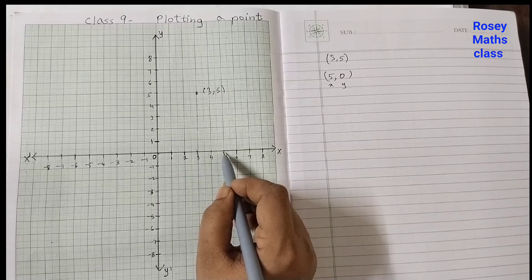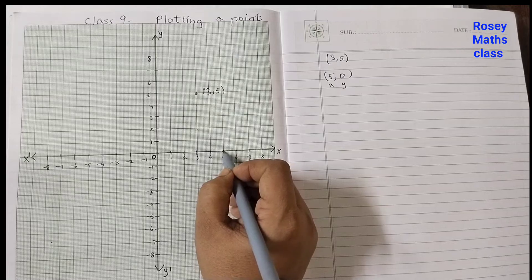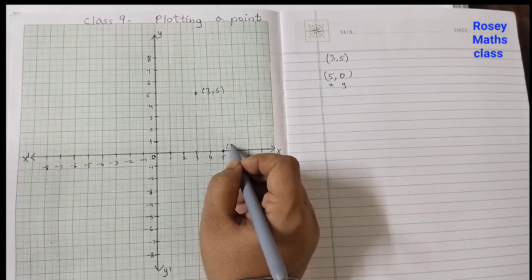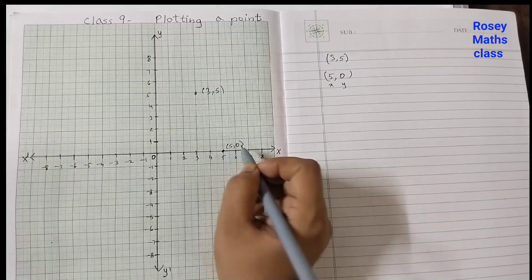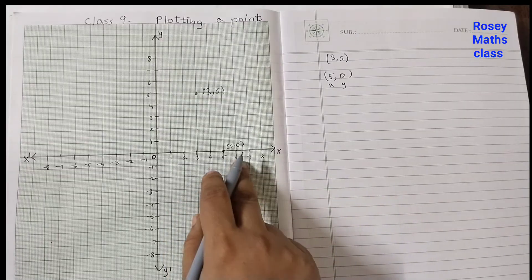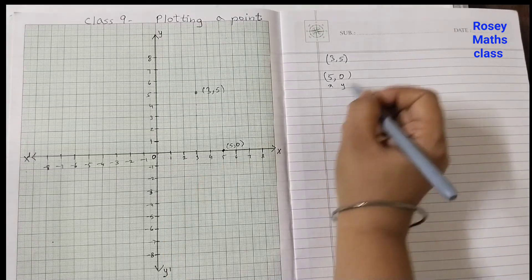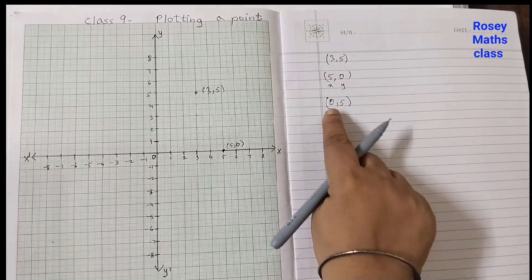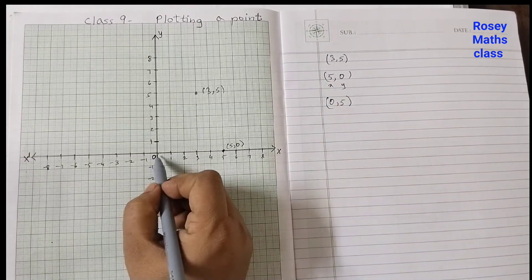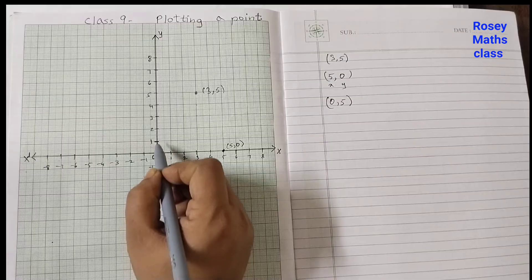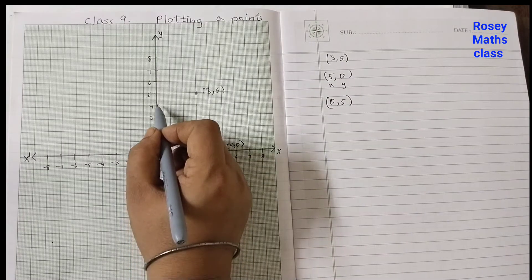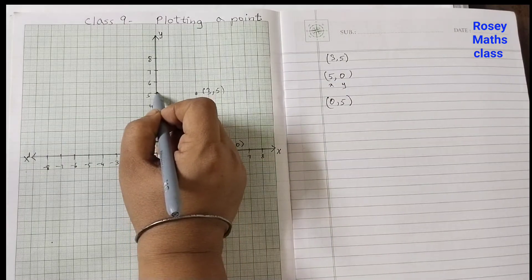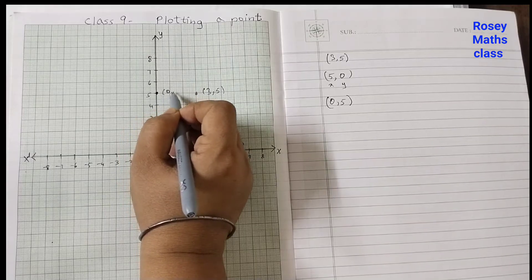So this is the point five, zero. Use always a pencil. I'm using a pen so that you can see it properly. If it is zero comma five: x is zero, y is five. So zero, and then five up: one, two, three, four, five. This point here is zero comma five.